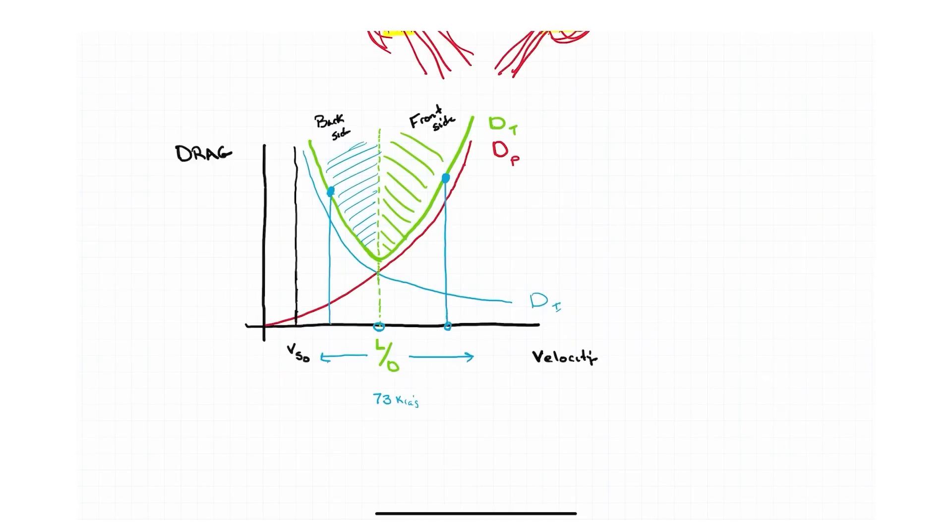So if I'm flying along right here at, I'll call it 80 knots airspeed, if I want to go faster to this speed, I simply add more power. But if I'm going slower and I want to fly, say, this speed here, this speed right here, I still have to add power.